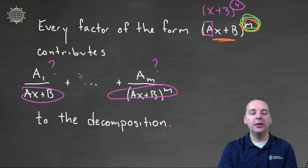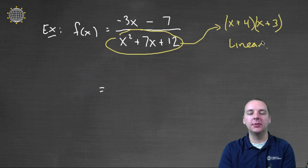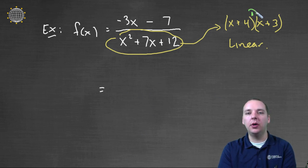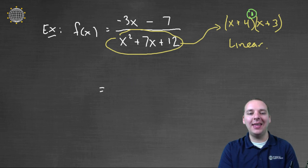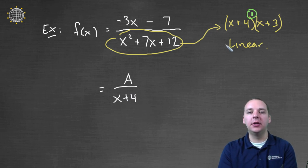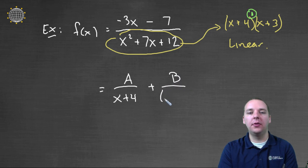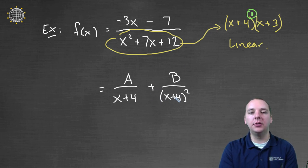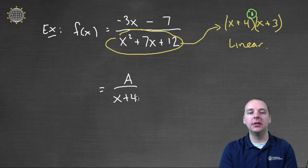Every factor of the form blank contributes this many terms. So X plus 4 is going to contribute how many terms in my decomposition? Just one, because it's X plus 4 to the first power. So it contributes A over X plus 4. Now just hypothetically — not changing anything — if this were X plus 4 squared, we would have an additional term like B over X plus 4 squared, and then cubed, and then the fourth, depending on the power. But mine's not squared, so I don't have the second term. It only contributes one term because it's to the first power.